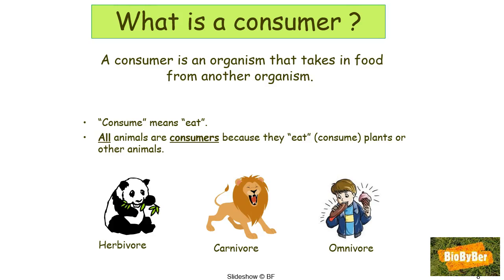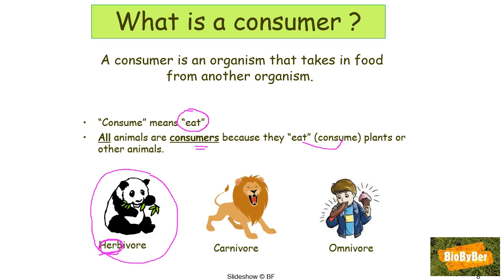What is a consumer? A consumer is an organism that takes in food from another organism. To consume means to eat — it has an entirely different meaning from a consumer in business class. All animals are consumers; all animals are eaters. Herbivores are animals that consume or eat plants only — see the word 'herb' for plants. Carnivores are animals that eat meat only. Your dog at home is actually a carnivore — by nature your dog is a carnivore and will eat meat only.